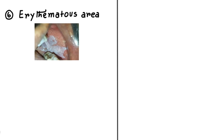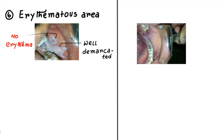Next, you should check the erythematous area. The periphery of Leukoplakia is most of the time well-demarcated and there is no erythematous area surrounding the white patch. However, in case of Lichen Planus, you can find an erythematous area surrounding the white areas. Here you can see there is no erythematous area surrounding the patch, but here in Lichen Planus, you can clearly see the erythematous area.